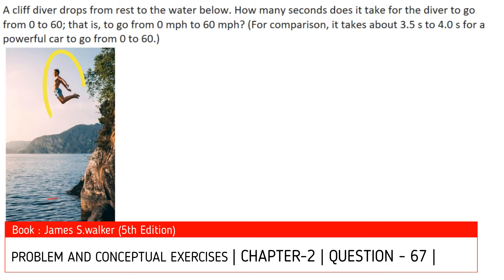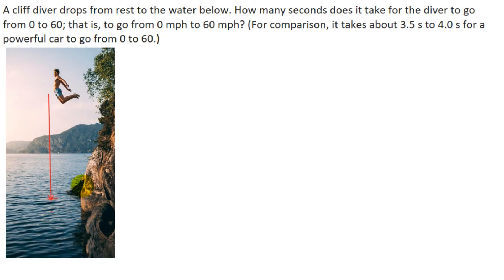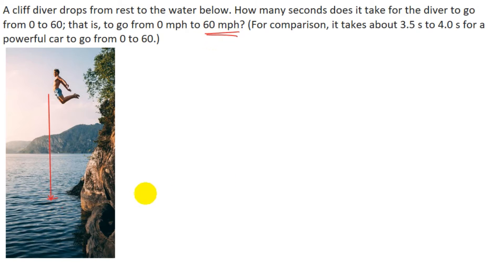A cliff diver drops from rest to the water below, and we need to find how much time it takes for the diver to go from 0 miles per hour to 60 miles per hour. At x₀ equals 0, the velocity v is 0 miles per hour because it starts from rest. At some later position the velocity becomes 60 miles per hour, and we have to give the answer in seconds.